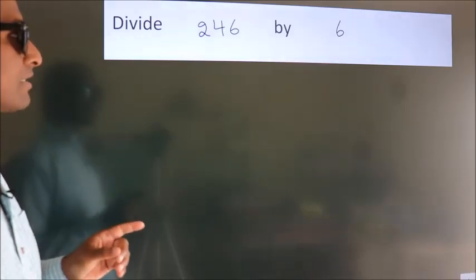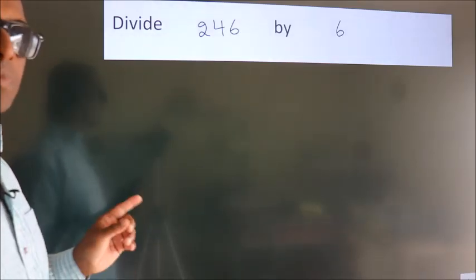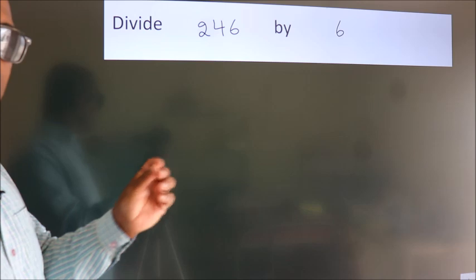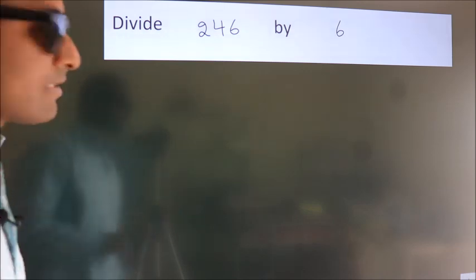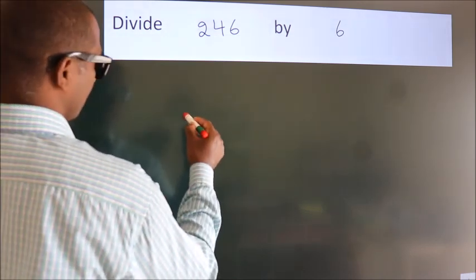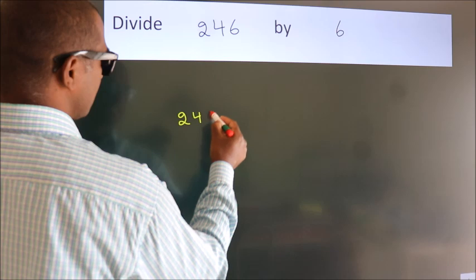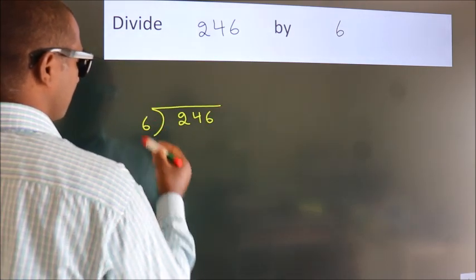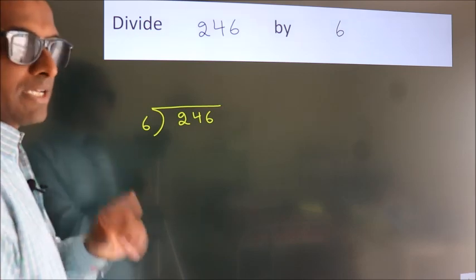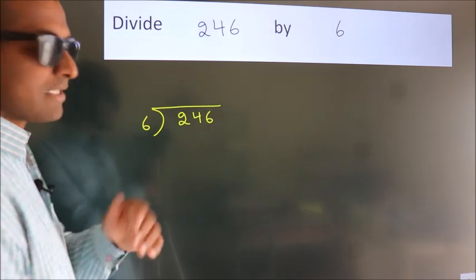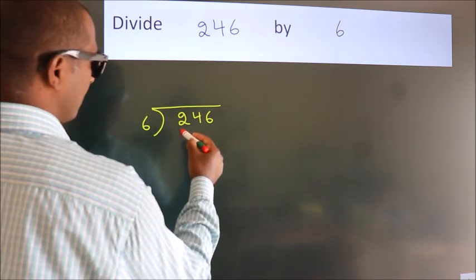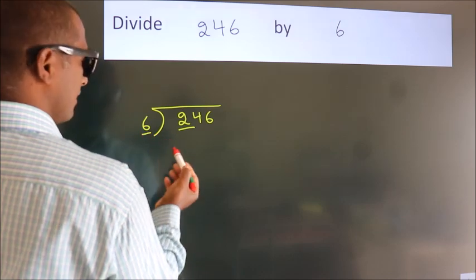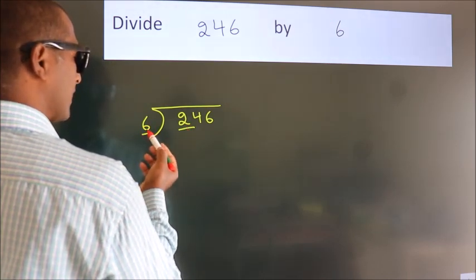Divide 246 by 6. To do this division, we should frame it in this way: 246 here, 6 here. This is step one. Next, we have 2 here. 6? 2 is smaller than 6.